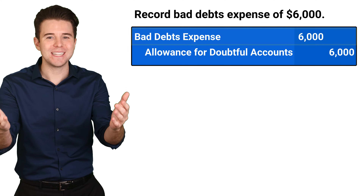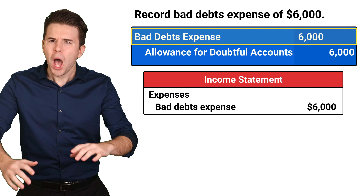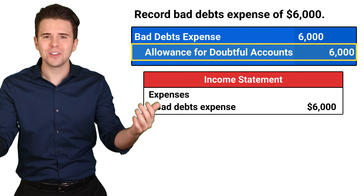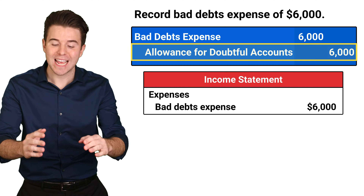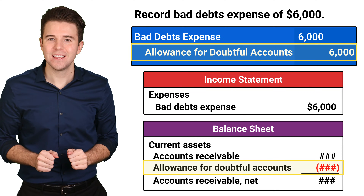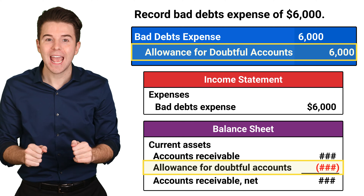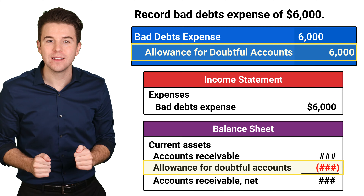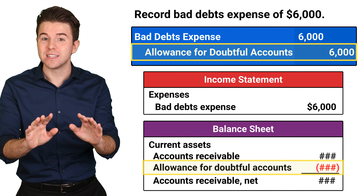So, we know that bad debts expense is reported on the income statement. But what is allowance for doubtful accounts? The allowance for doubtful accounts is a contra-asset account, meaning it has a normal credit balance and reduces the accounts receivable account. Let me show you how this is reported on the balance sheet.